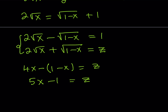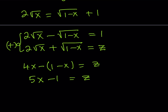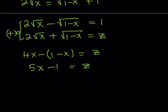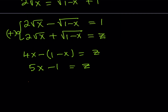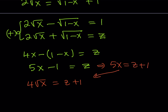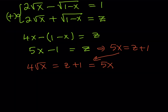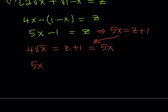Now if we add those equations just like before, we get 4 root x equals z plus 1. Notice that from our result, z plus 1 equals 5x. Substituting that in gives something much simpler: the conclusion is 5x equals 4 times square root of x.